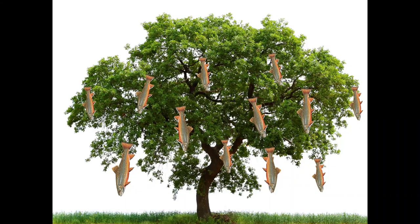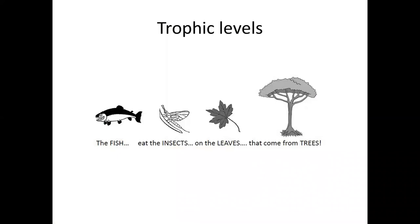One of my favorite phrases is 'trout grow on trees.' You might be thinking this is ridiculous and doesn't make any sense. But trout don't physically grow on trees like apples — rather, they rely on all of the input from our trees and shrubs and things on land to build the food web for them to eat. Fish eat insects, which eat leaves, which come from trees. This is a really important thing to remember because we're talking about this middle step in our food web, and without our insects, we're not going to have too many fish.